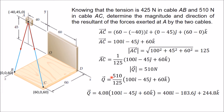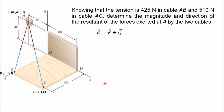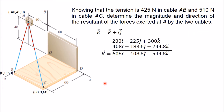Now we determine the resultant R = P + Q by adding the corresponding components. The x-component of R is Σ Fx = 200 + 408 = 608. The y-component is Σ Fy = −225 + (−183.6) = −408.6. The z-component is Σ Fz = 300 + 244.8 = 544.8. So R = 608i − 408.6j + 544.8k.